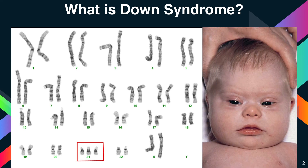Down syndrome varies in severity among individuals, causing lifelong intellectual disability and developmental delays. It is the most common genetic chromosomal disorder and causes learning disability in children. It also commonly causes other medical abnormalities, including heart and gastrointestinal disorders.